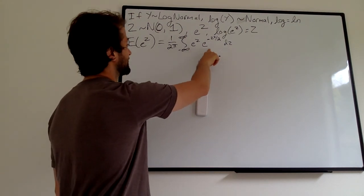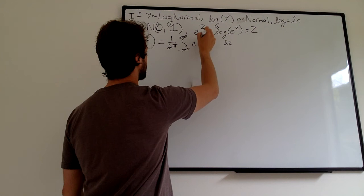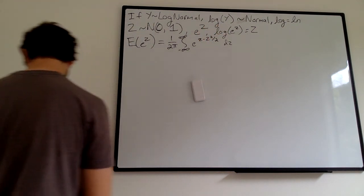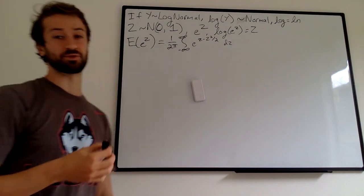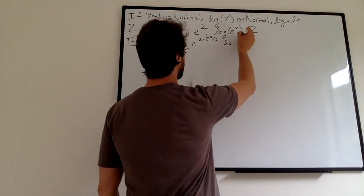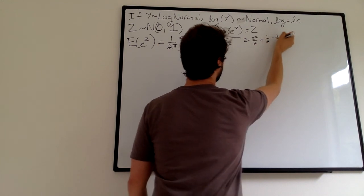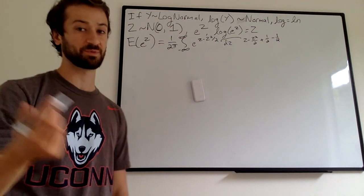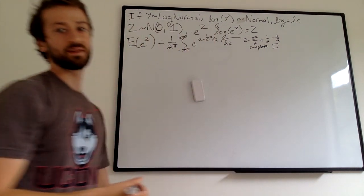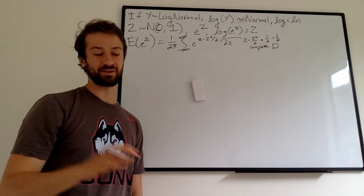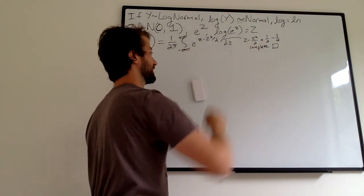Right away we have e to z times e to negative z squared over 2. We can combine these terms — we can just sum the exponents — getting e to the z minus z squared over 2. This looks like a kind of tricky integral. We have a trick: we take the term in the exponent, z minus z squared over 2, and we add and subtract one half. So we're basically adding 0 — this is probably a trick you see all the time in algebra. We add and subtract one half and we complete the square.